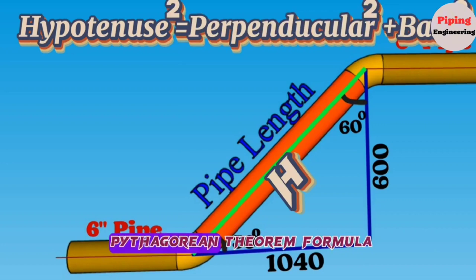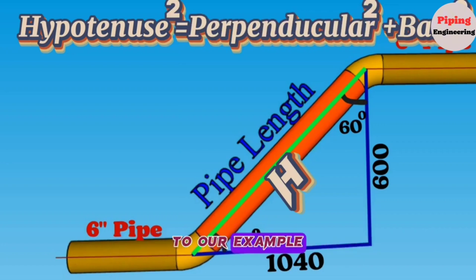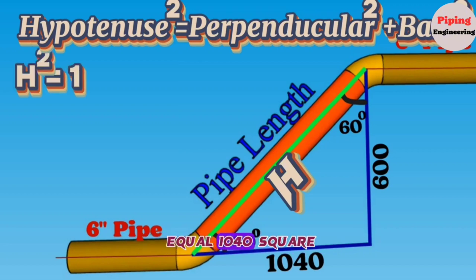If we apply the Pythagorean theorem formula to our example, then H hypotenuse squared equals 1040 squared plus 600 squared.